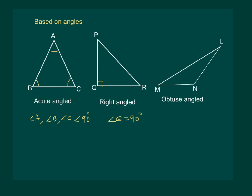While in an obtuse-angled triangle, one of the angles is greater than 90 degrees, for instance, in the above triangle, angle N is greater than 90 degrees and hence it is an obtuse triangle.